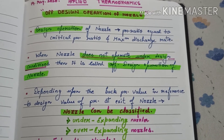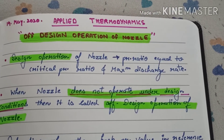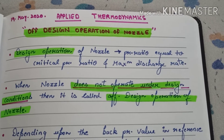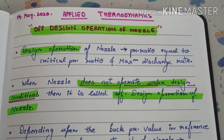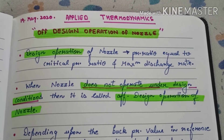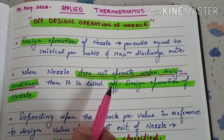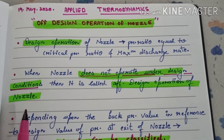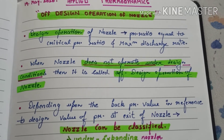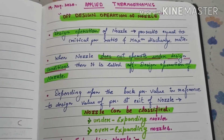These are the conditions for under-expanding and over-expanding nozzles. The design condition is when the pressure ratio equals the critical pressure ratio and there is maximum discharge rate. If the nozzle does not operate on these design conditions, it is called the off-design operation of the nozzle. I hope this video was useful, thank you.